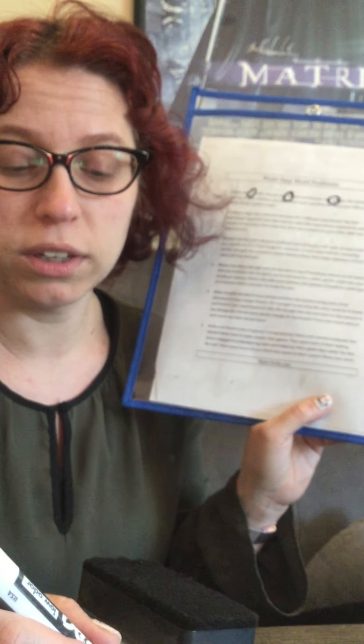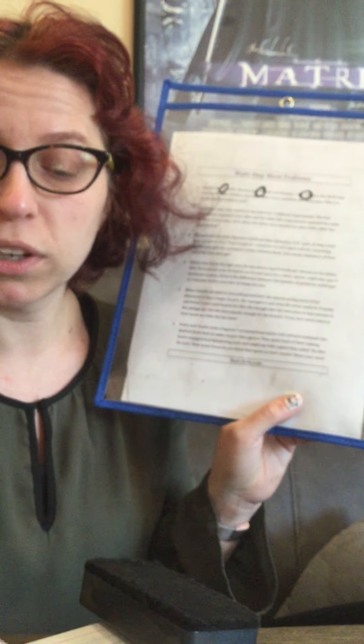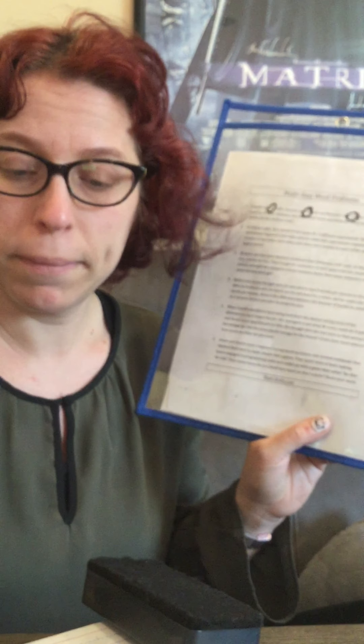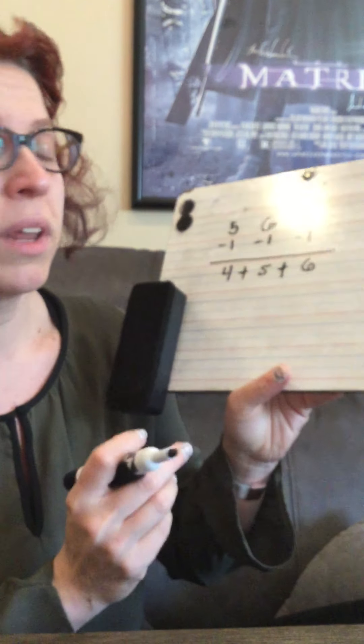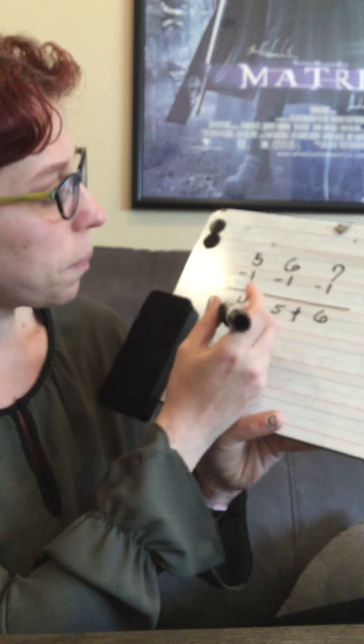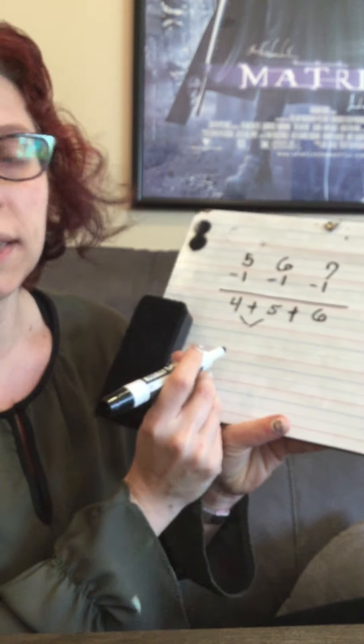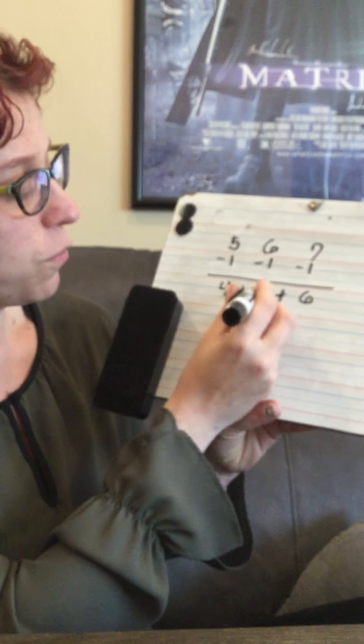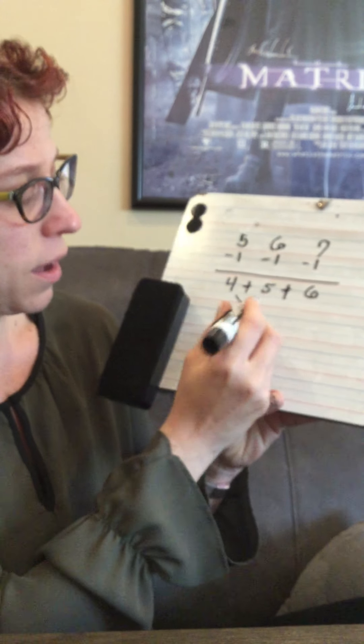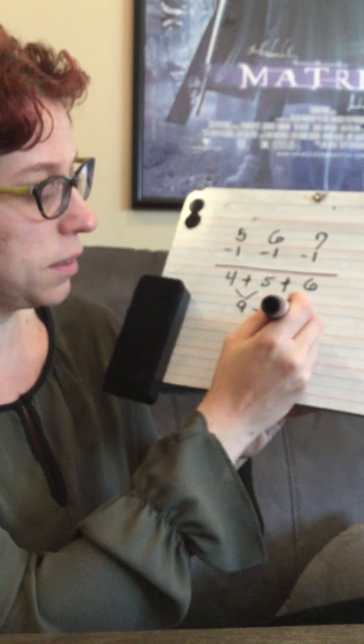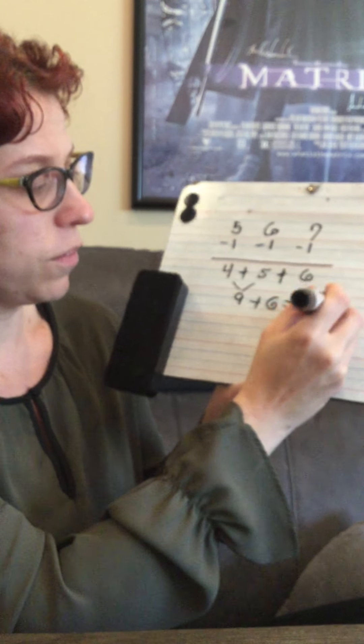So five minus one is four, six minus one is five, and seven minus one is six. Then we're gonna add it up. What I like to do when I add up problems that have more than two numbers is I like to group them into an easy addition number. So four plus five is nine, and then nine plus six equals fifteen.